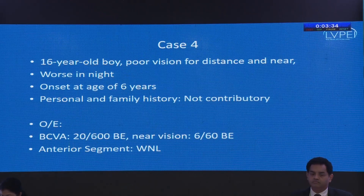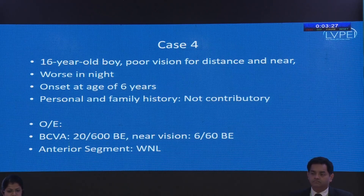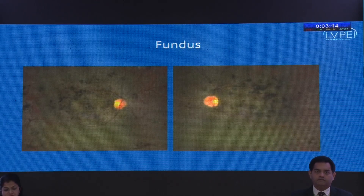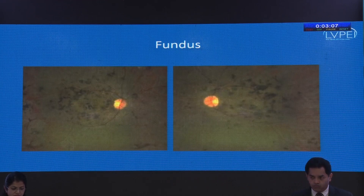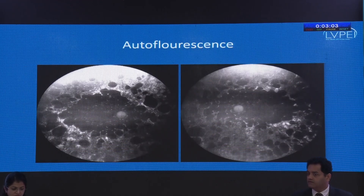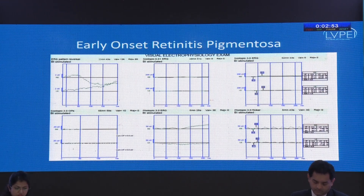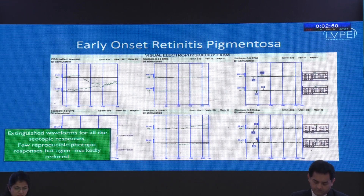Another case: a 16-year-old boy with poor vision for distance and near, worse at night, with onset at six years. Personal and family history are not contributory. BCVA is very low at 2/600; the anterior segment is normal. The fundus picture shows pigmentary spicule-like changes even at the posterior pole with slight disc pallor and diffusely attenuated blood vessels — consistent with early onset retinitis pigmentosa. Autofluorescence shows diffuse changes all over the fundus, and ERG classically shows an extinguished pattern for both rod and cone responses.